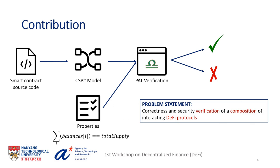We follow a formal verification approach: we take the source code of the smart contracts of these DeFi applications and translate them into a formal model. For these applications, we also define a set of properties — statements that we want to hold throughout the execution of these protocols. One example is the token balance invariant, which states that all balances of users who hold tokens combined are equal to the total supply. With the model and properties, we utilize the formal verification framework PAD to check if properties hold in all cases or if a violation exists.